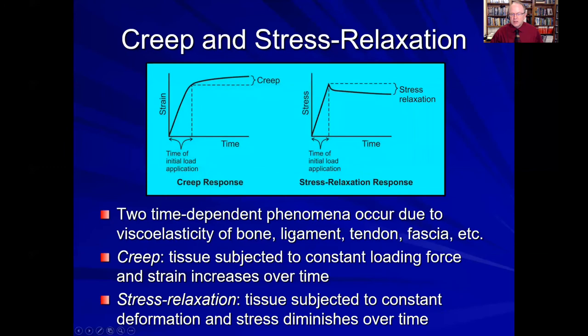Stress relaxation looks at loading a ligament or tendon to a certain length. We load it to a certain length, and it's going to have a certain stress. As we stretch, we get increased stress in the tissue, but if we keep it at the same length, what happens over time is stress relaxation — the stress in the tissue goes down. Because of the viscous properties of the ligament and tendon, it tends to reduce its internal stress and resists force less the longer we keep it at that length. These are two very important time-dependent characteristics that we should understand as clinicians in the tissues that we treat.